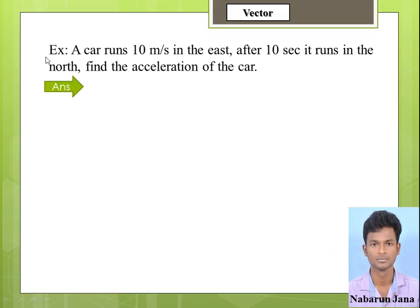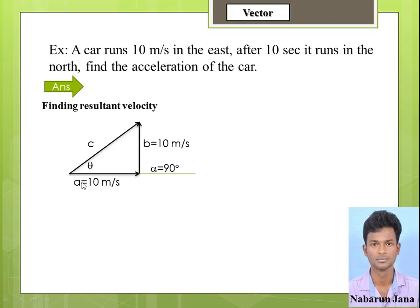Example: a car runs 10 meters per second in the east. After 10 seconds it runs in the north. We have to find the resultant velocity. The car runs 10 meters per second in the east direction, and after 10 seconds it runs in the north direction.